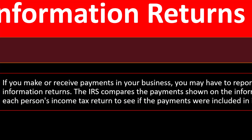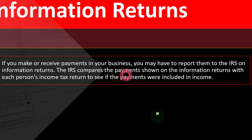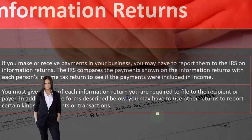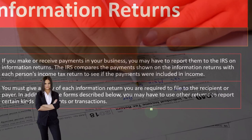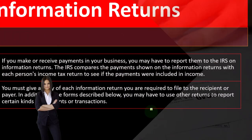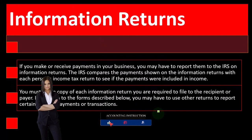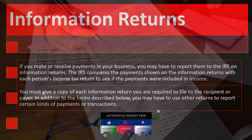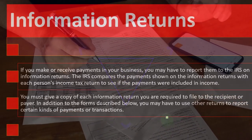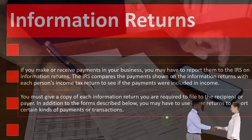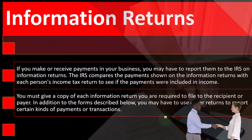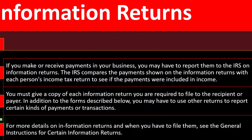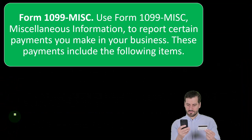The IRS compares payments shown on the information returns with each person's income tax return to see if the payments were included in income. You must give a copy of the information return you are required to file to the recipient or payer. When you think about 1099 forms and W-2 forms, we think about giving them to the person that did the work to help them generate their tax return — but what the IRS really wants is for you to give that information to the government so they can double-check that the person is reporting that income on their taxes.